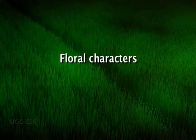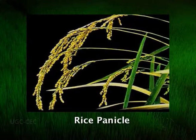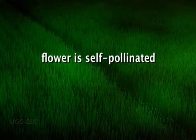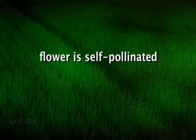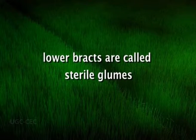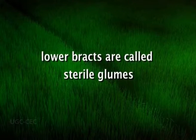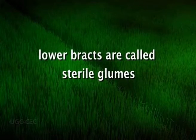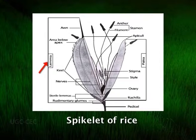Floral characters: the rice inflorescence is a loose terminal panicle; the spikelet is the unit of inflorescence. The spikelets are one-flowered and self-pollinated. The spikelet consists of a minute axis on which a single floret is borne in the axils of two-ranked bracts. The bracts of the lower pair are called sterile glumes or empty glumes.